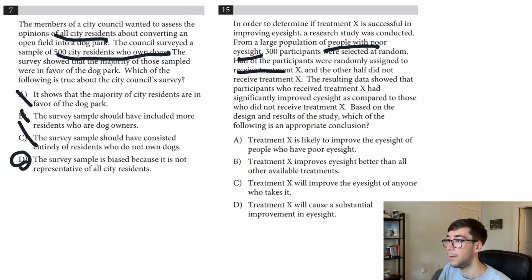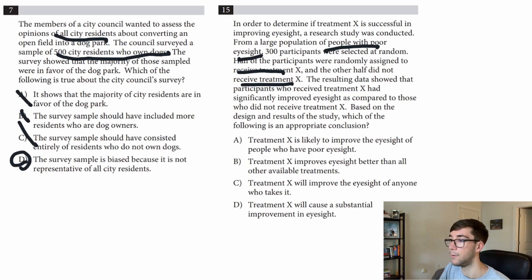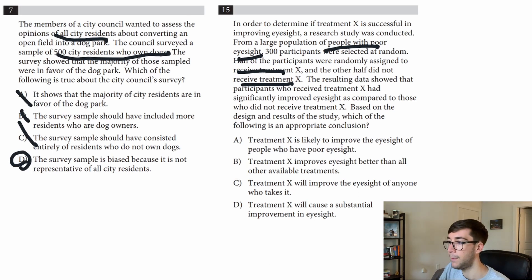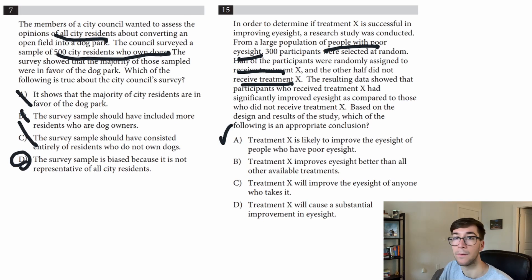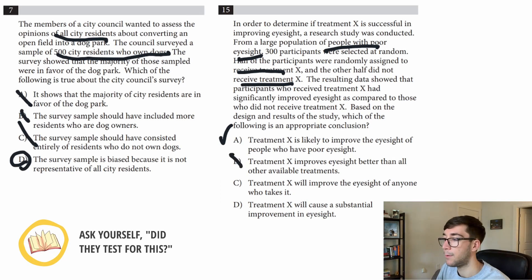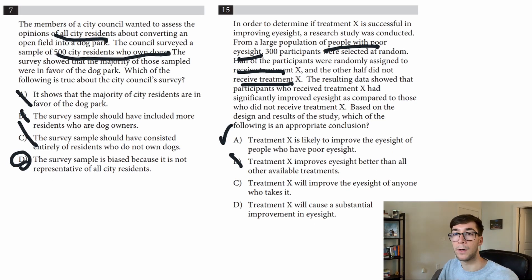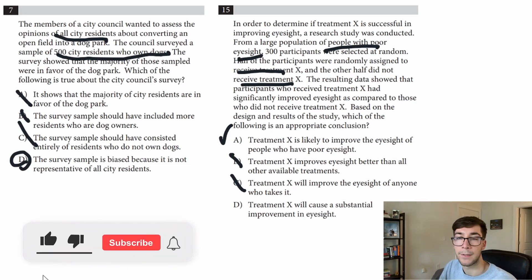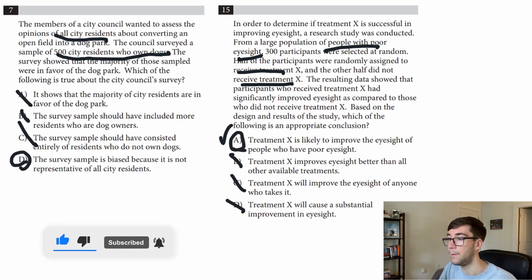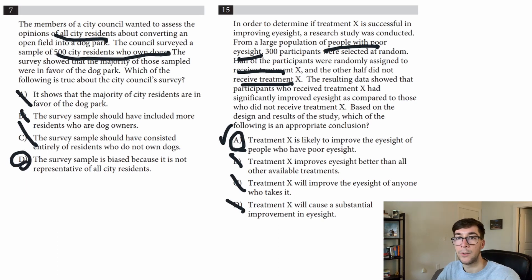Half of the participants were randomly assigned to receive the treatment and the other half did not. The resulting data showed that participants who received treatment X had significantly improved eyesight compared to those who did not. The question asks which conclusion is appropriate. Answer A — 'treatment X is likely to improve the eyesight of people with poor eyesight' — that sounds good. Answer B — 'treatment X improves eyesight better than all other available treatments' — it was never tested against other treatments, so not B. Answer C — 'treatment X will improve the eyesight of anyone who takes it' — we can only apply this to people with poor eyesight, so not C. Answer D — 'treatment X will cause a substantial improvement' — the study didn't specify substantial, so not D. Answer A is correct.